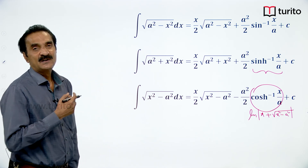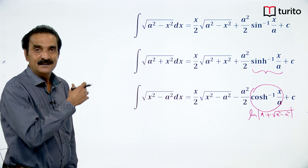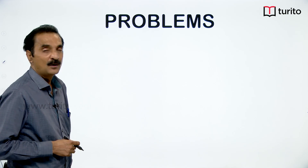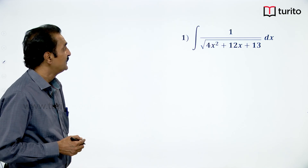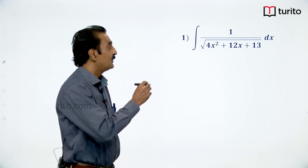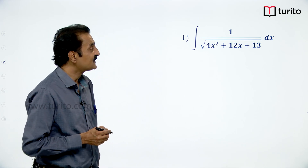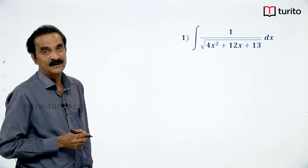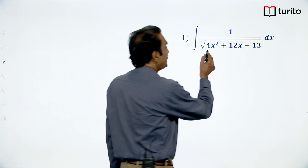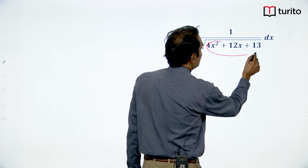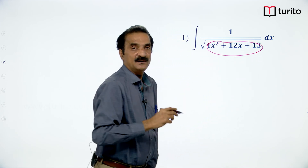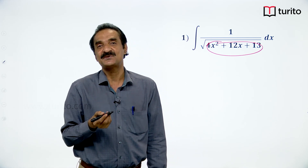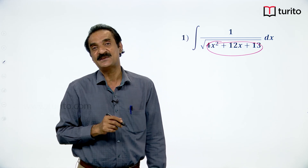Now let us solve some problems on these results and proceed further. Problem: integral of 1 / √(4x² + 12x + 13). First, we convert this quadratic expression into x² + a² or x² − a² or a² − x² form.